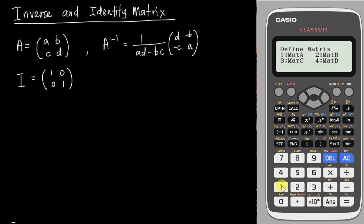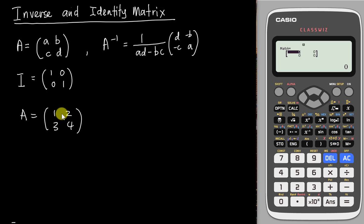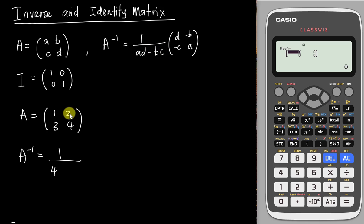Go back to the menu, number 4. You need to define a matrix — let's say matrix A. For SPM the inverse matrix must be 2×2 only; at higher level you'll have 3×3. So set 2 rows and 2 columns, then insert a random matrix, say 1 2 3 4. To find the inverse manually: A inverse equals 1 over (AD minus BC), multiplied by the rearranged matrix. For 1 2 3 4, AD is 1×4=4 and BC is 2×3=6, so the determinant is 4 minus 6 = negative 2.